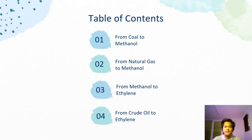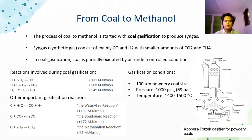In this presentation, we will talk about the process from coal and natural gas to methanol, methanol to ethylene, as well as the crude oil to ethylene. The process of coal to methanol starts with coal gasification to produce syngas, also known as synthetic gas.